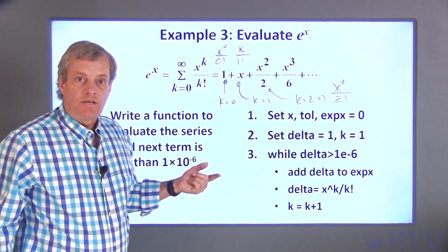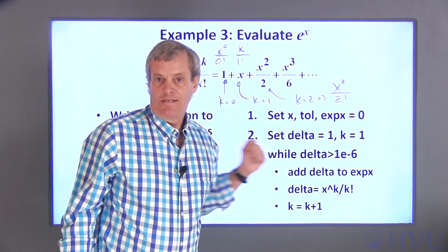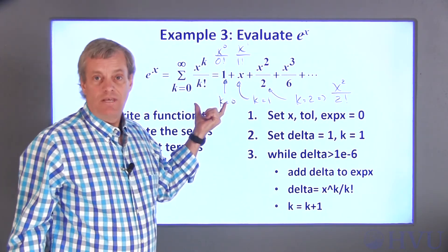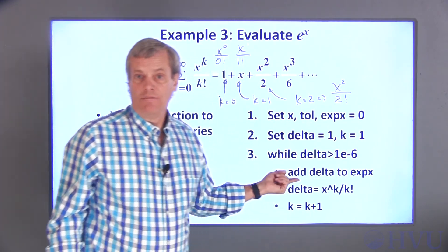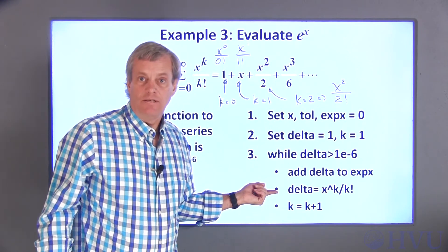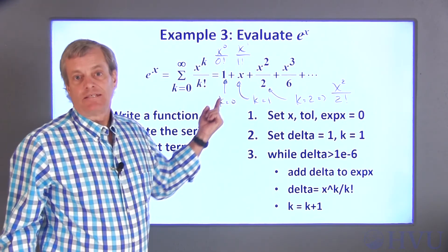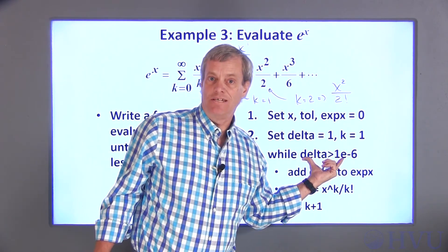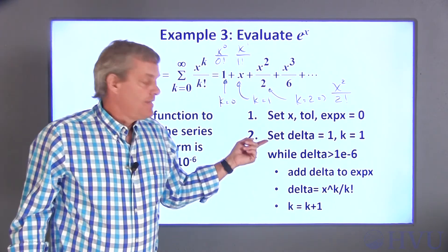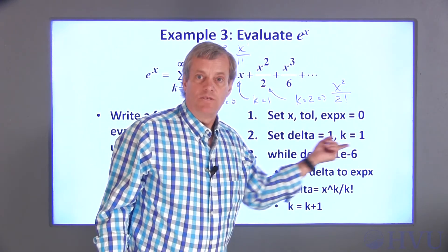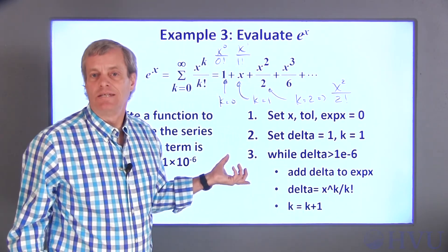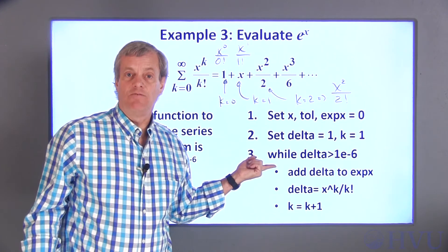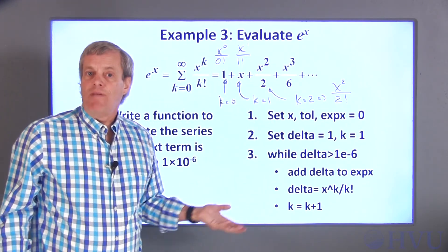In my loop, expx is initially 0 and delta is 1. Since delta is greater than 1 times 10 to the minus 6, the condition is true and I do the first calculations. First, I add delta to expx so expx becomes 1. Then I calculate a new value for delta and increase k by 1. The loop goes back to the while statement and checks whether delta is greater than the tolerance. If it is, the process repeats until delta becomes small enough, the expression is false, and the loop terminates. There are various ways to get to the same result — for example, I could initialize k to 0 and update it before recalculating delta.